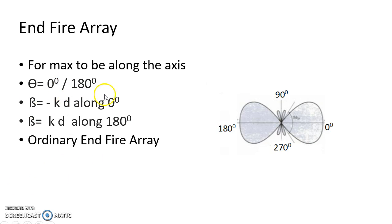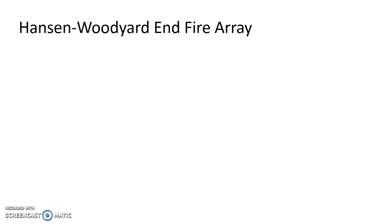Though this Endfire Array provides maximum radiation pattern along 0 or 180 degrees, it does not ensure maximum directivity. That is why this type is called the Ordinary Endfire Array — it does not ensure maximum directivity in the main lobe. To enhance the directivity, we can modify the progressive phase shift value in both directions by some amount to get maximum directivity for the main lobe.